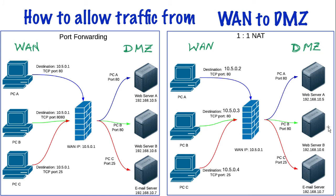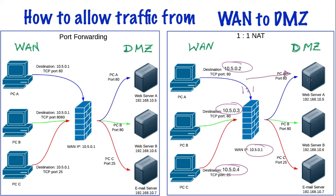Port forwarding works well for small businesses, and if you only have a single public IP address it's the only way to allow WAN traffic into the DMZ. For companies with multiple public IP addresses, a better option is to use 1-to-1 NAT. In our example, our company has a number of IP addresses — 105.0.1, .2, .3, and .4. With 1-to-1 NAT you provide a 1-to-1 relationship so that traffic destined for 105.0.2 flows directly into the DMZ and only to web server A, and 105.0.3 goes directly to web server B. We don't have the port issue here — we can use port 80 for both because the destinations have different IP addresses.